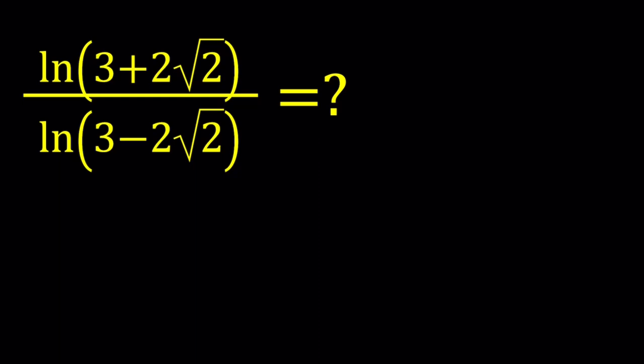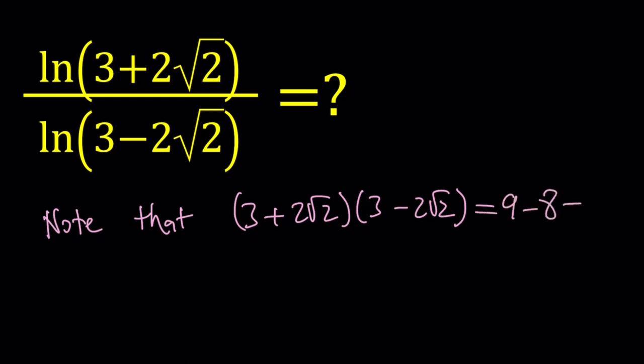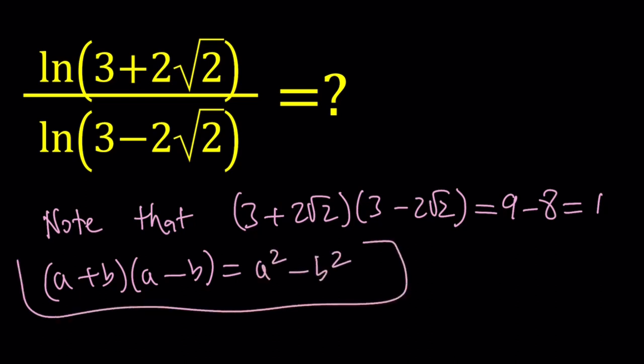Okay, so first of all, let's note that 3 plus 2 root 2 multiply by 3 minus 2 root 2 equals 9 minus 8, which is equal to 1, from difference of 2 squares. Quick reminder, the difference of 2 squares is when you multiply a plus b and a minus b, you get a squared minus b squared.